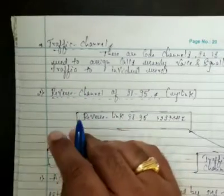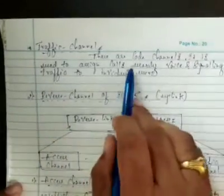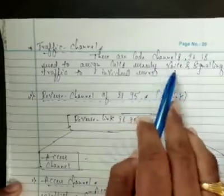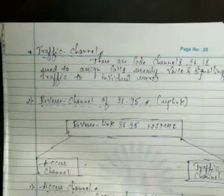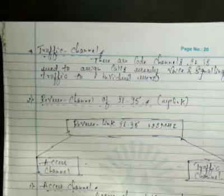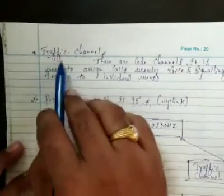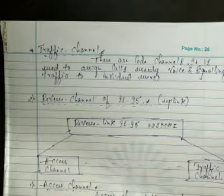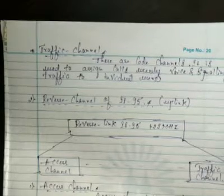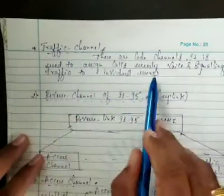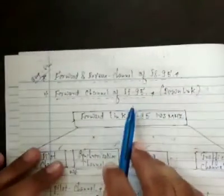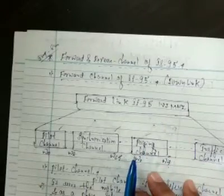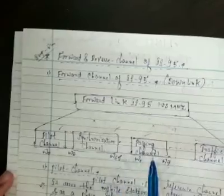The forward traffic channel carries voice and video traffic. It is used to assign calls — both voice and signaling traffic — to individual users. Whenever you send voice messages or videos, they are carried by the traffic channel to the other end user. When the dedicated control channel is released, the traffic channel remains active until the end of the call to carry voice and video to individual users.